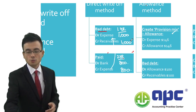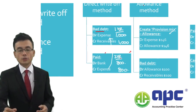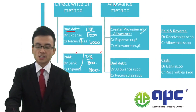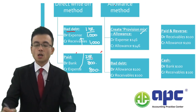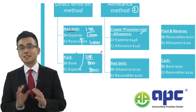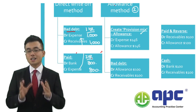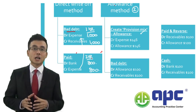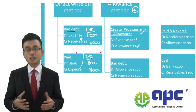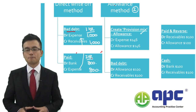It does not align with the accruals or matching concept. That's why quite a lot of businesses in the real world use the second method, which is the allowance method. But please remember that the examiner does not require you to know the allowance method in the ACCA exam — but let's go through it.